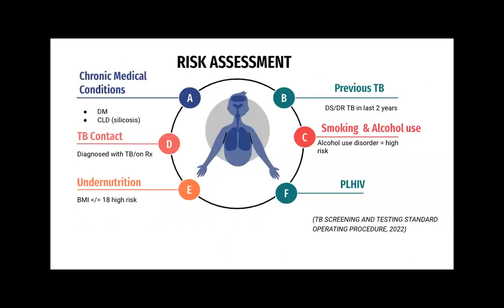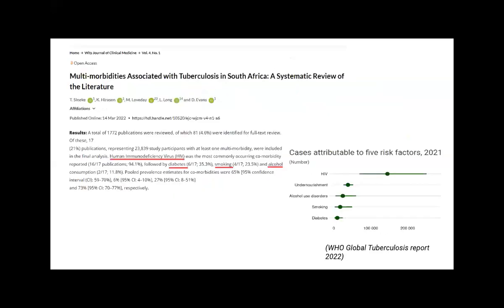In terms of the risk assessment — people at risk for contracting TB — we look for chronic medical conditions such as diabetes and chronic lung disease, specifically silicosis, anyone with previous TB in the last two years, anyone who smokes or uses alcohol (alcohol use disorder puts you at high risk), anyone with a TB contact, undernutrition with BMI less than or equal to 18, and people living with HIV. A systematic review published in 2022 in the British Journal of Clinical Medicine found the most common comorbidities were HIV, diabetes, smoking and alcohol. The WHO global TB report reported cases attributable to five risk factors: HIV, undernourishment, alcohol use disorders, smoking and diabetes.